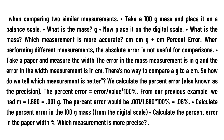The percent error equals error divided by value, multiplied by 100%. From our previous example, m = 1.680 ± 0.001 g. The percent error would be 0.001 ÷ 1.680 × 100% = 0.06%. Calculate the percent error in the paper width.